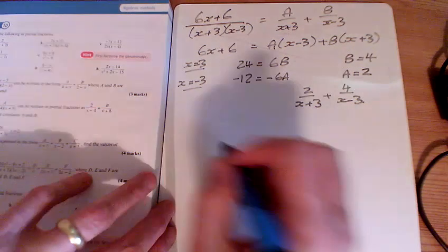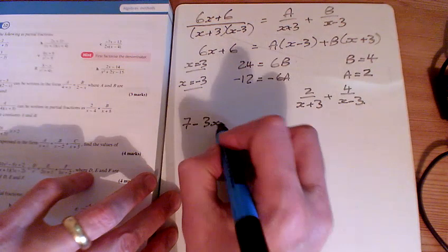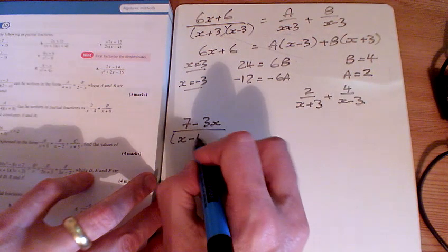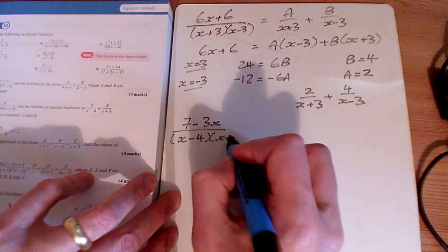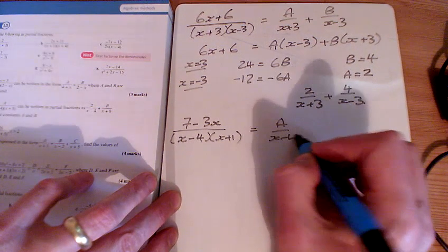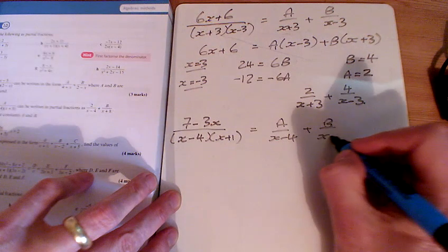And for f, so I've got 7 minus 3x, and again, I'm going to factorize straight away here. So I've got an x minus 4 and an x plus 1. So we've got A over x minus 4 plus B over x plus 1.